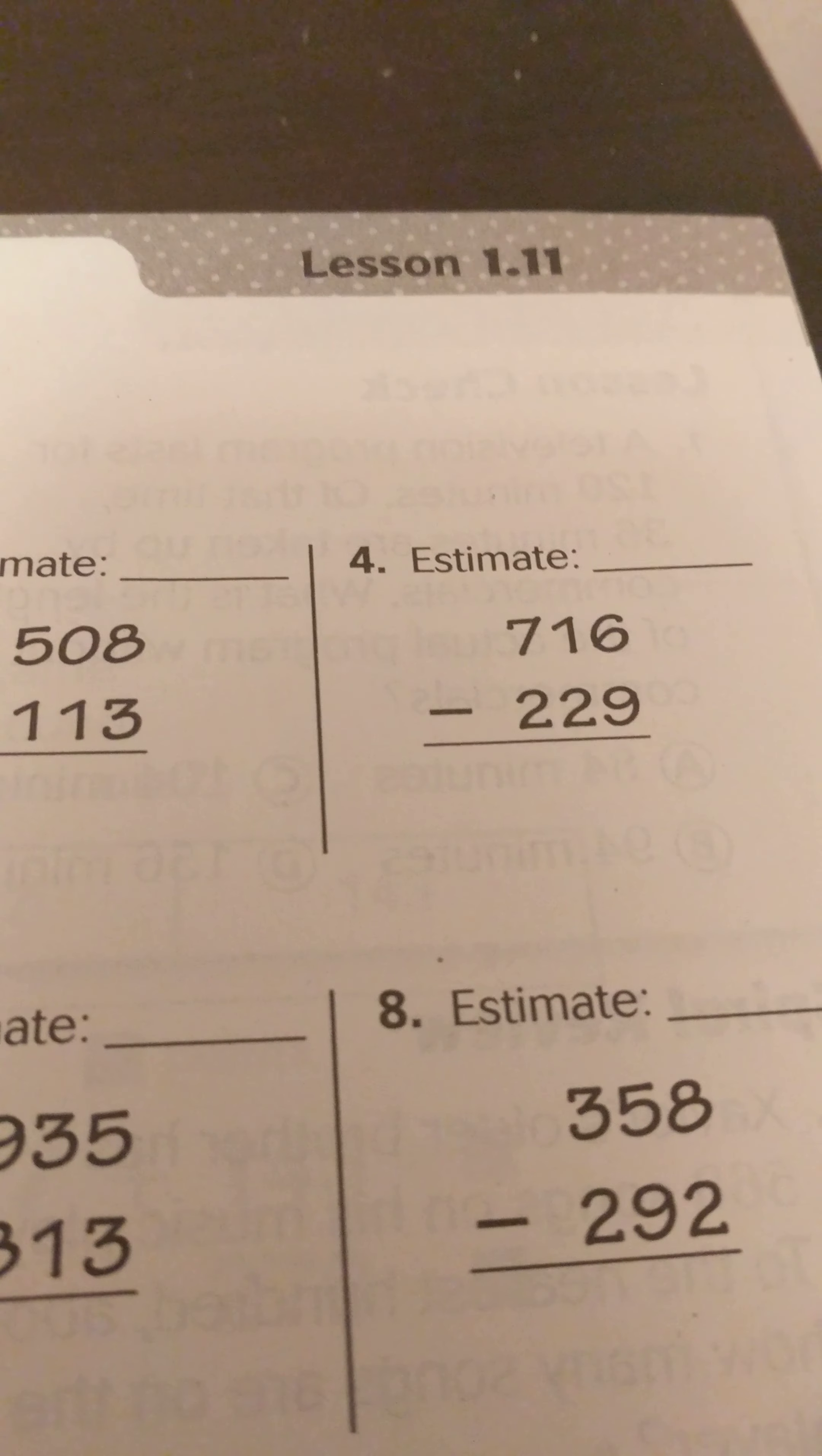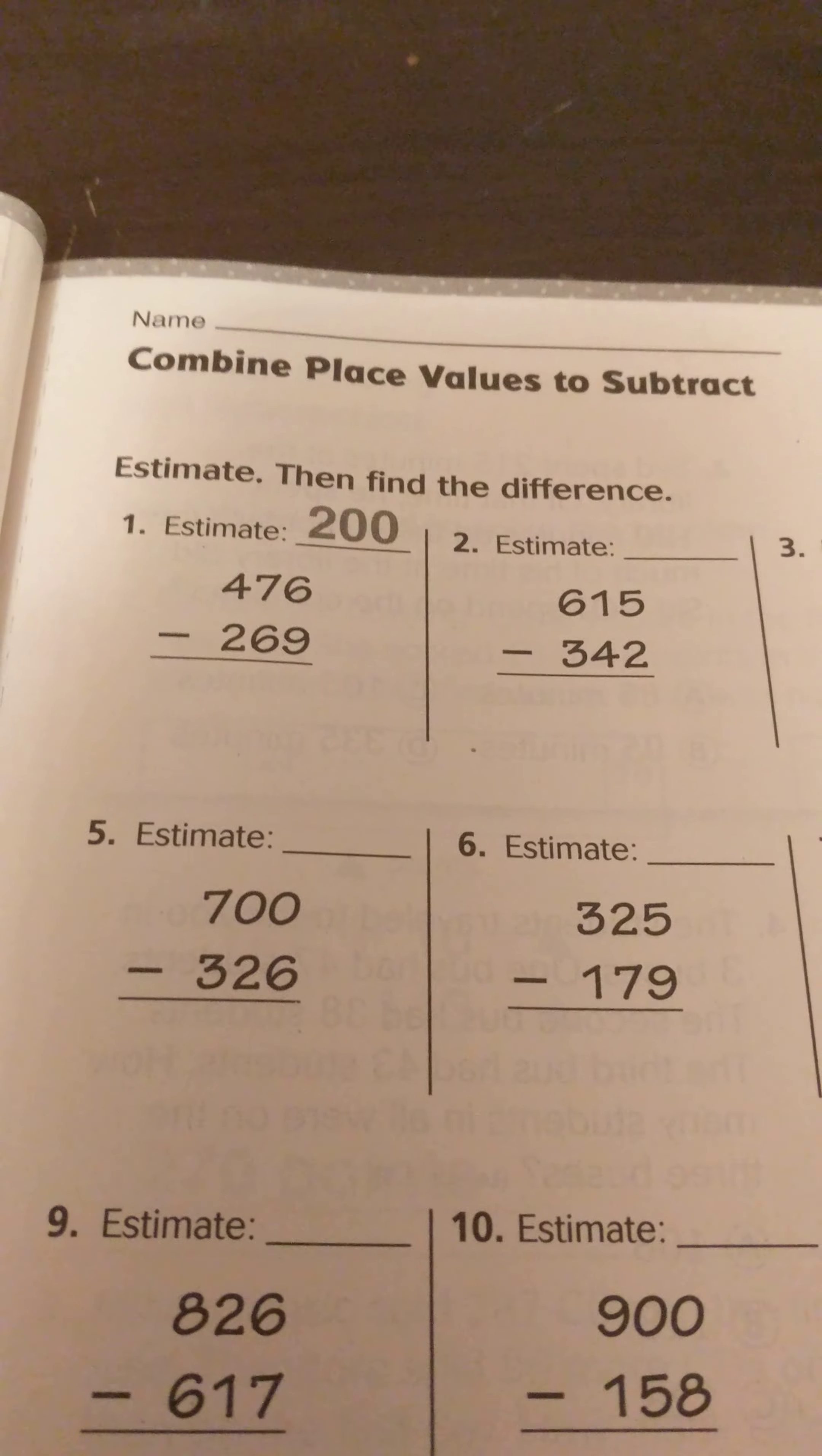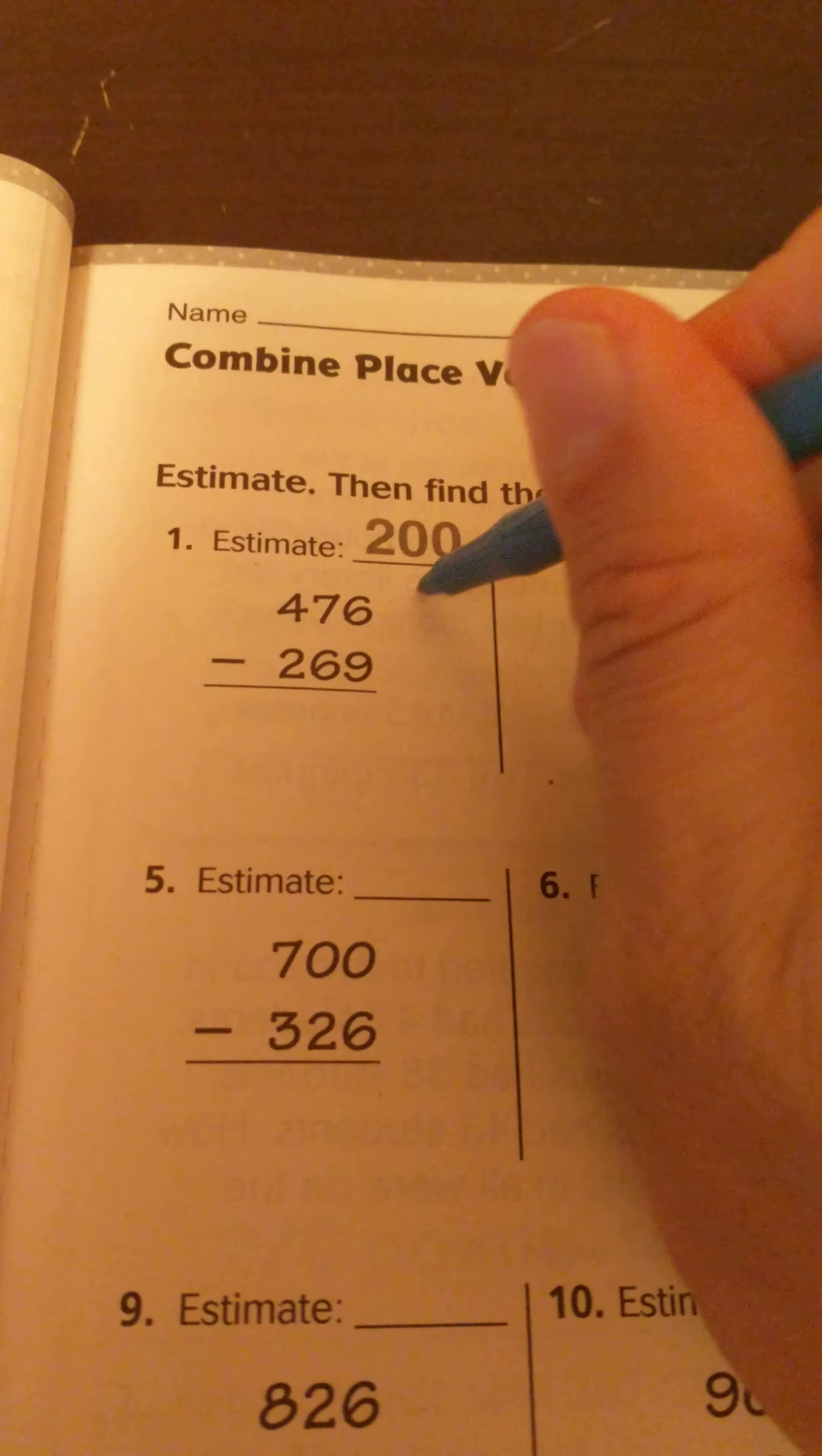This is third grade Go Math lesson 1.11 and today we're working on combining place values to subtract. Alright, so you see again we have the whole thing where we're going to estimate, round and estimate. And if you're not familiar with that from the last lesson, we were rounding to the nearest hundred here, so that would make this 500.